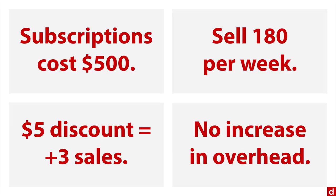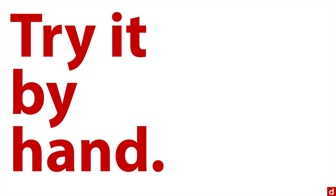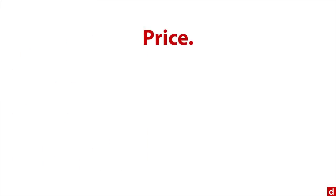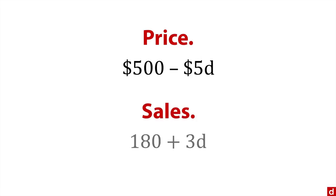I'm going to show you how to do all this by hand. Let's go back to price. We have $500 as the current annual subscription price, and you subtract $5 for each unit of discount D. So one discount is $5, two discounts is $10 and so on. For sales, you're currently selling 180 new subscriptions per week, and you add three more for each unit of discount.